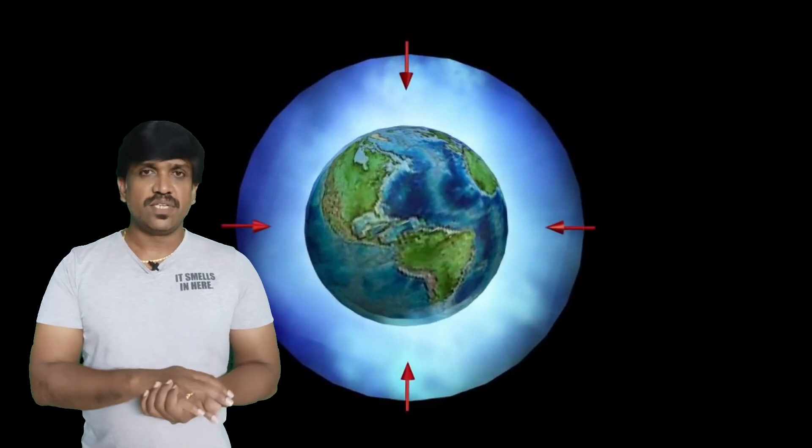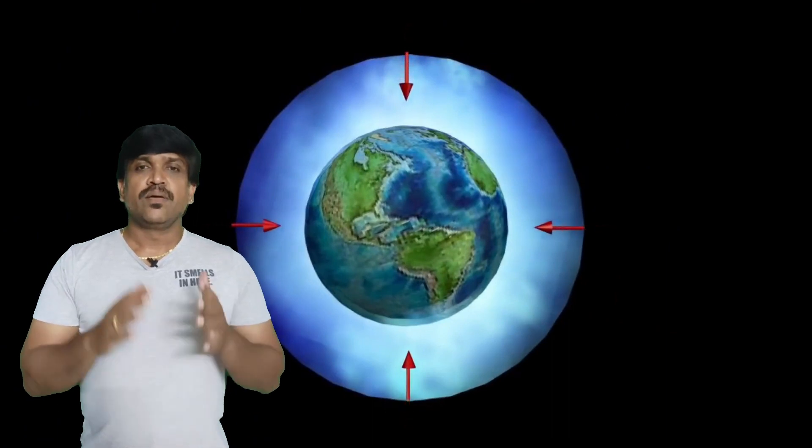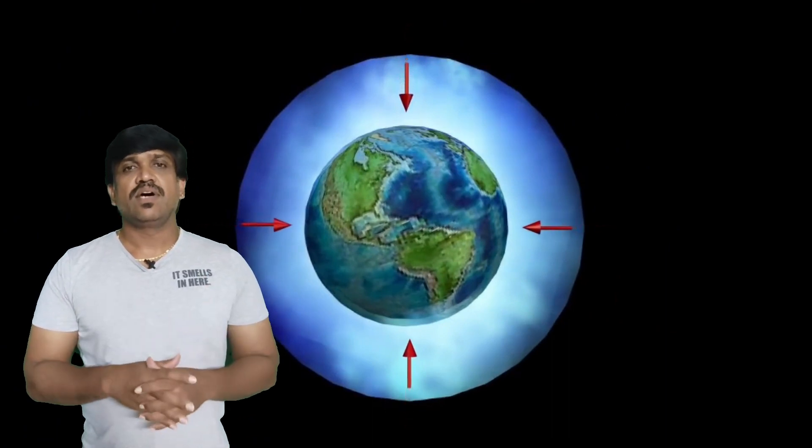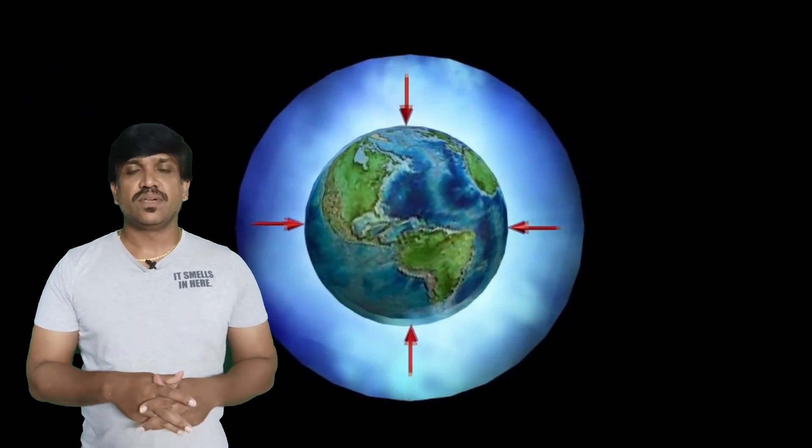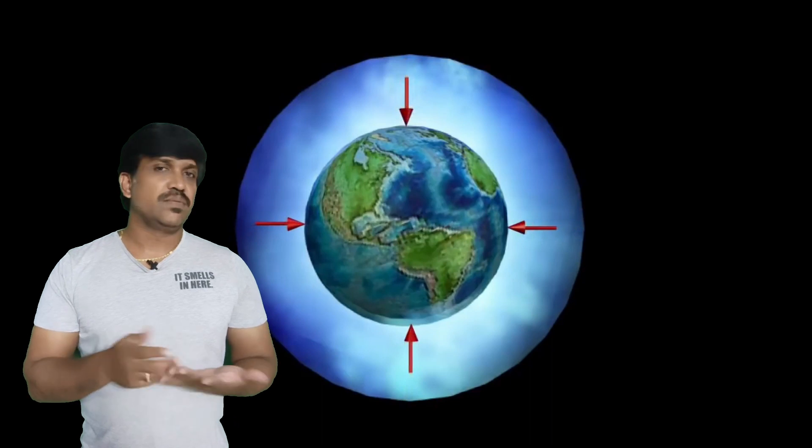First of all, what is the maximum vacuum in sea level? We are looking at atmospheric pressure on the sea level. Basically, the atmospheric pressure on the sea level is 760 mm of Hg.